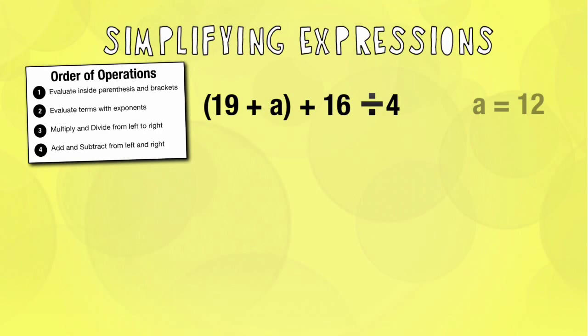Okay, now we're going to simplify some expressions. This one is the quantity of 19 plus a plus 16 divided by 4 when a equals 12.